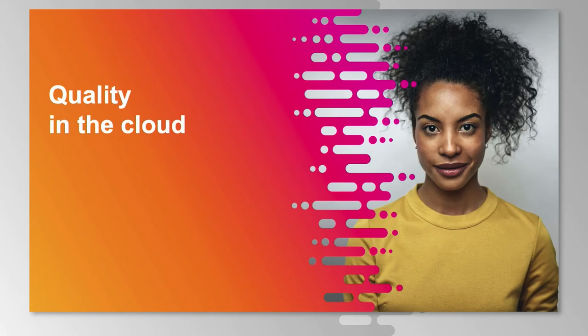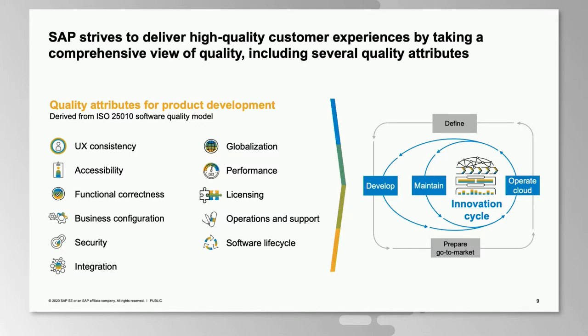These three factors are important to create value along the intelligent enterprise, which comes in several facets: an integrated stack between the Business Technology Platform, end-to-end applications in line of business, as well as verticals in the industries, paired with experience management and Climate 21. Regarding quality in the cloud, SAP strives to deliver high-quality customer experiences with a comprehensive view on quality. Our quality attributes, mandatory for product development, start with UX consistency, accessibility, functional correctness, business configuration, security, integration, and globalization to make solutions available in local markets.